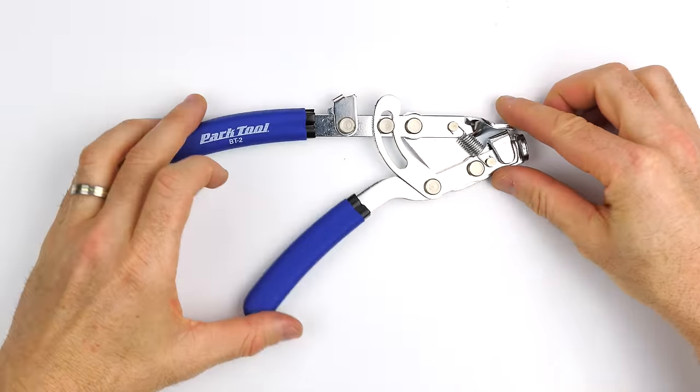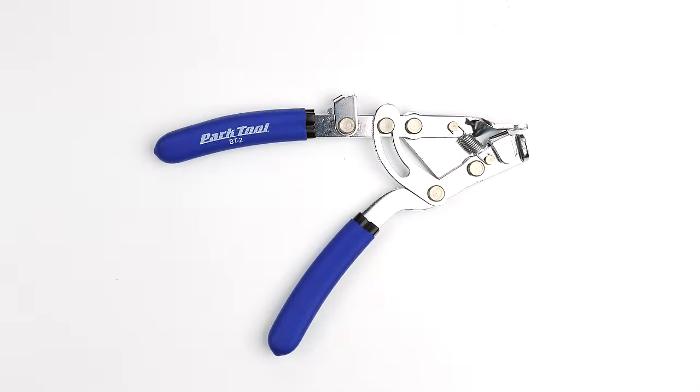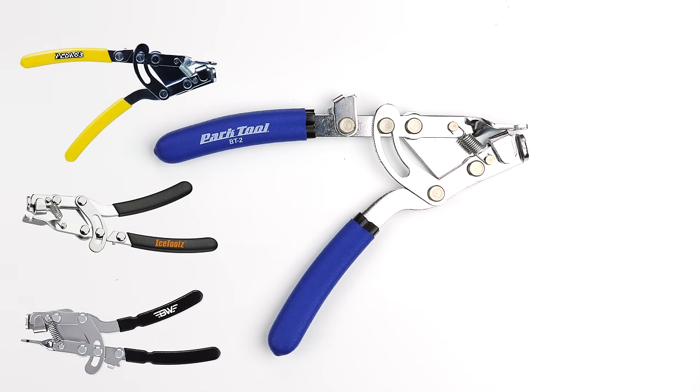So there we are for today - a quick look at the Park Tool BT2, known as the fourth hand tool or cable stretcher. I'll call this one very handy. As mentioned earlier, there are alternatives to this which I'll put links to in the video description below. And with that, thanks for watching.